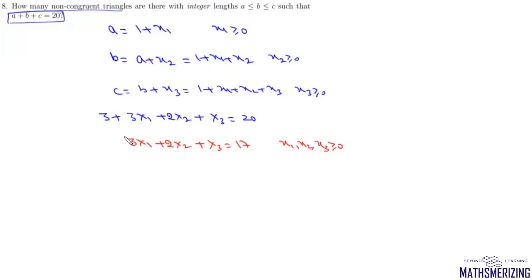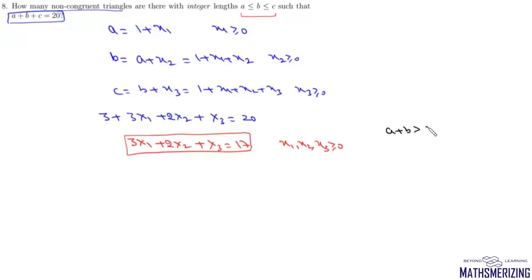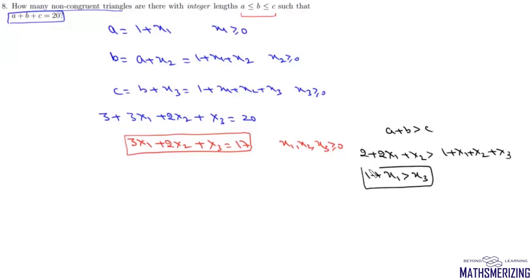We also need the triangle inequality: a+b > c. Substituting: (2+2x₁+x₂) > (1+x₁+x₂+x₃), which simplifies to 1+x₁ > x₃, meaning x₃ < 1+x₁. We now find the number of solutions to 3x₁ + 2x₂ + x₃ = 17 subject to x₃ < 1+x₁.